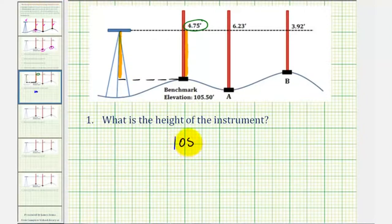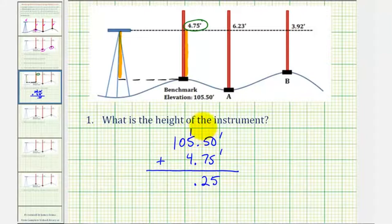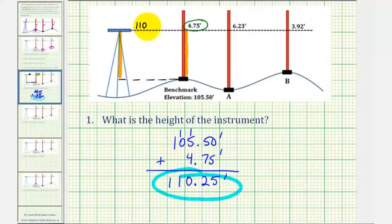So we'd have 105.50 feet plus 4.75 feet. When adding decimals, we want to line up the corresponding place values and the decimal point. Bring the decimal point down, then add from right to left: zero plus five is five; five plus seven is twelve, so we put a two in the tenths place and carry a one. In the ones, one plus five plus four is ten — zero in the ones, carry a one to the tens. We have a one in the tens and a one in the hundreds. So the height of the instrument is 110.25 feet, and we can think of the line of sight as having an elevation of 110.25 feet.